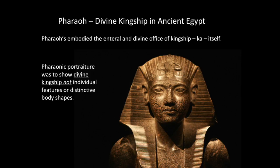The divine aspect of the office of kingship was what gave authority to the human ruler. The living king, or pharaoh, was associated with the god Horus — the powerful, virile, falcon-headed god who was believed to bestow the throne on the first human king. Pharaonic portraiture was meant to show divine kingship, not individual features or distinctive body shapes.